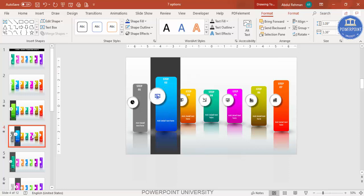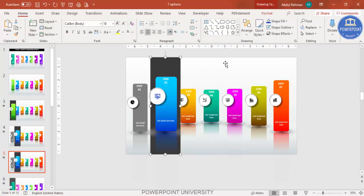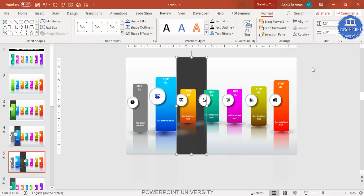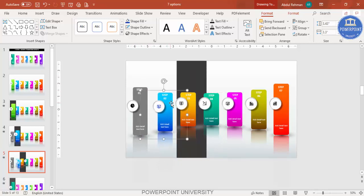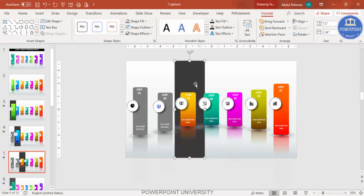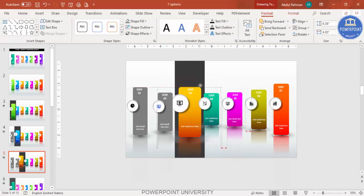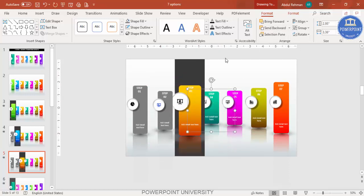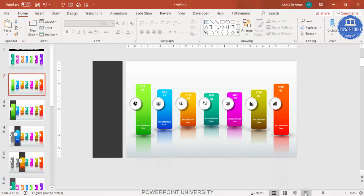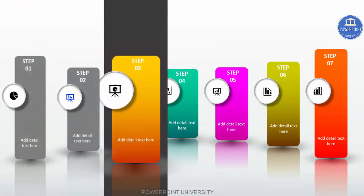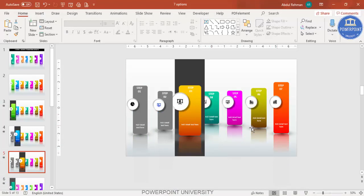To move to the next one, press Ctrl+D to duplicate the slide, then move the element to the third option. Go to Format > Send to Back, hold Shift and reduce the size, then change step two to gray to indicate it's complete. Increase the size of step three by holding Shift. Let's play it now — you can see first comes, second comes, third comes like this. Do the same for the remaining options.